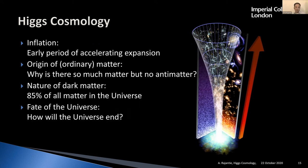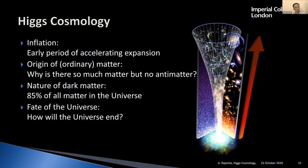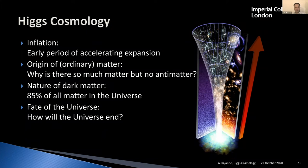I've got here a list of four topics I'll briefly mention. First, inflation: we believe there's a lot of evidence that in the very early stages the universe underwent a period of accelerating expansion called inflation, but we don't know what caused it. Second, the origin of matter — ordinary matter, atoms — where did it all come from? The Higgs field plays a central role. Third, the nature of dark matter: most of the matter in the universe is not made of atoms, and the Higgs field may tell us something about that. And finally, I'll finish by discussing what the Higgs field may tell us about the end of the universe.